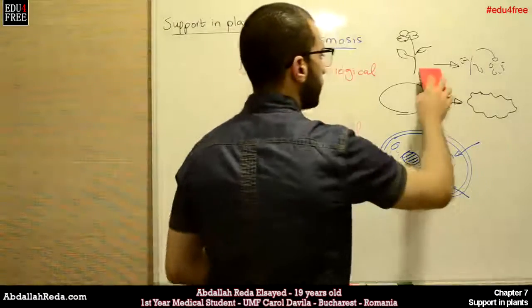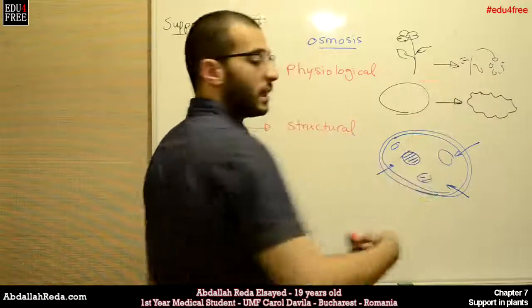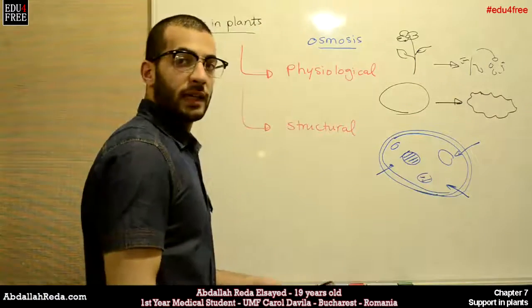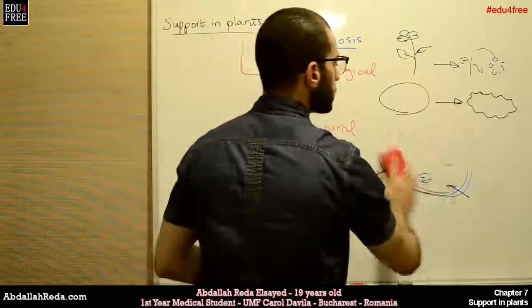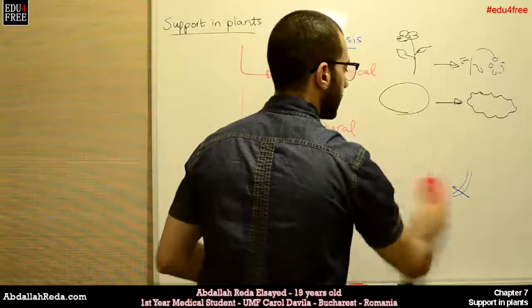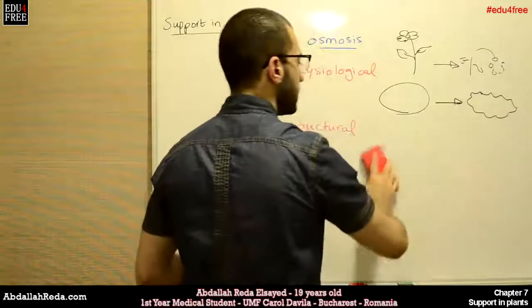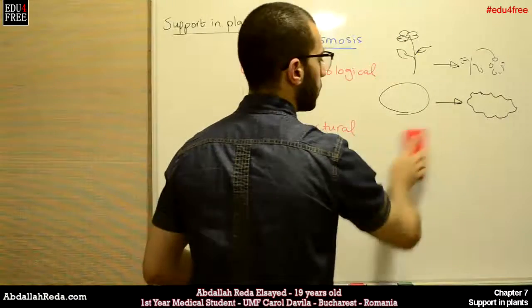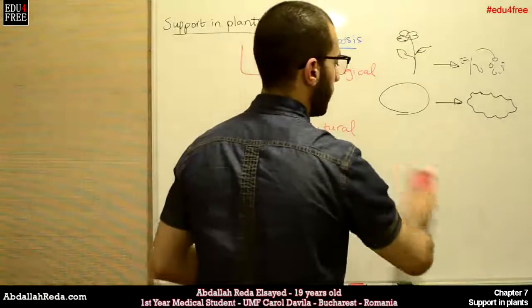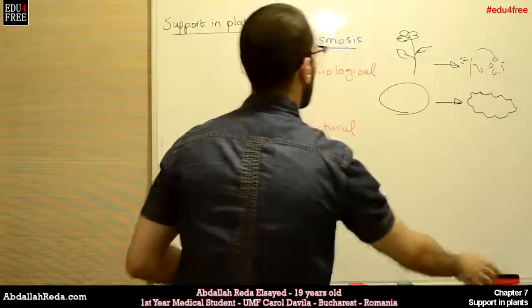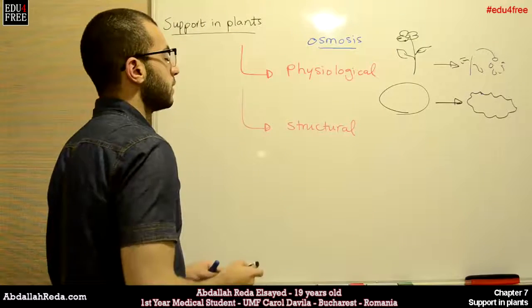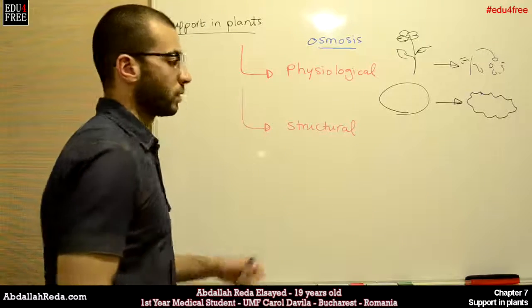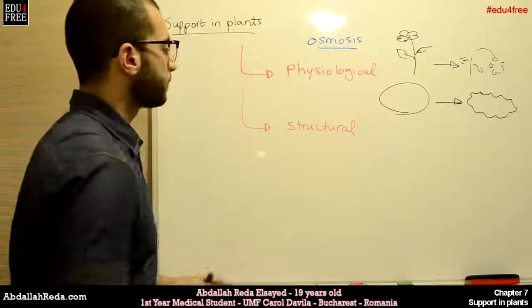If the field is re-irrigated again, we will see that the plant will re-maintain its old shape. This is the physiological support.